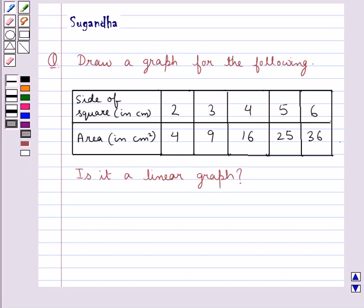Hello and welcome to the session. Today I will help you with the following question. The question says, draw a graph for the following. Is it a linear graph? In the table given to us, we are given the side of the square and the area of the square, and we have to display this information on the graph.